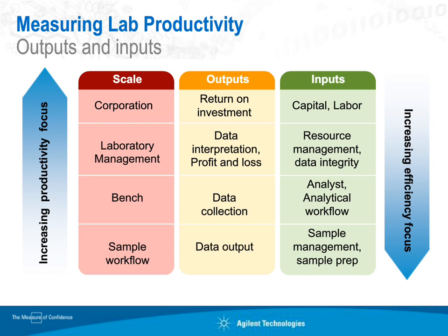Ultimately, productivity and efficiency are a balancing act — you can't really have one without the other. Productivity is focused on things like making sure there are redundant instruments for critical operations; you wouldn't want an instrument to go down and stop your production lines or inhibit your ability to release product. Whereas efficiency means you want the fewest number of instruments to complete the job — the less investment into those instruments, the better from an efficiency standpoint.